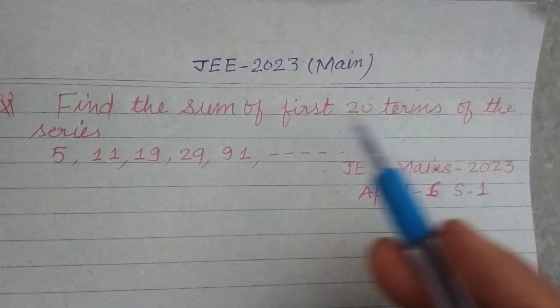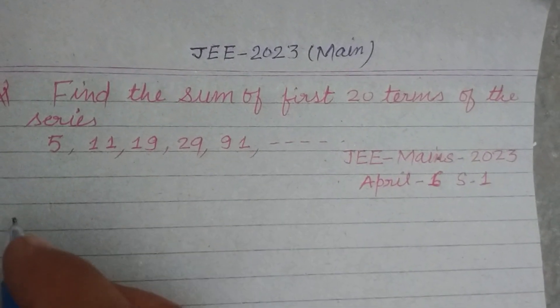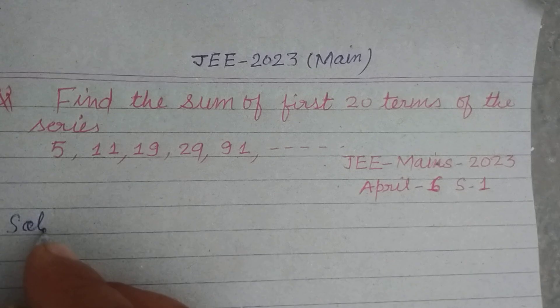Find the sum of the first 20 terms of the series: 5, 11, 19, 29, 91 and so on. So students, this is a special series.